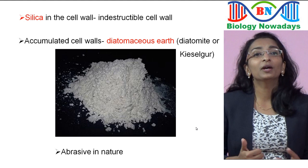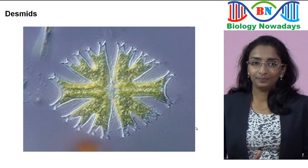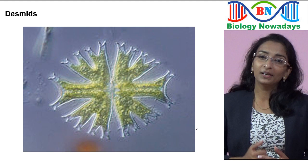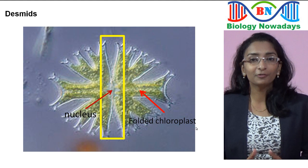Now about desmids — another group of organisms under chrysophytes. As all these organisms belong to Kingdom Protista, they are all unicellular. Desmids are also unicellular organisms, but the cell is divided into two symmetrical compartments separated by a narrow bridge. The nucleus is located in this bridge. Each compartment has a large folded chloroplast for photosynthesizing.